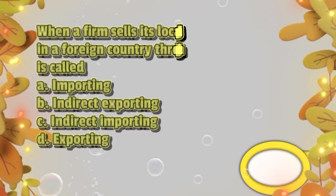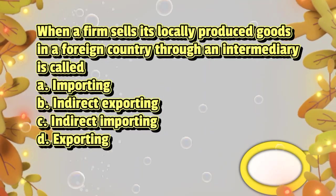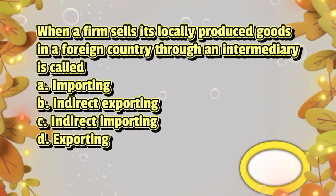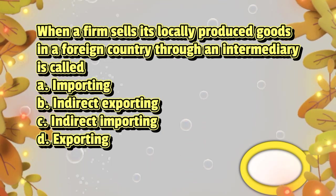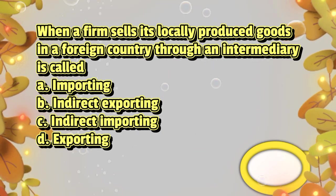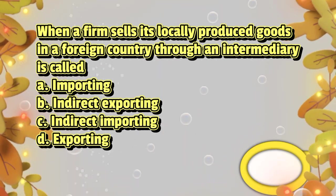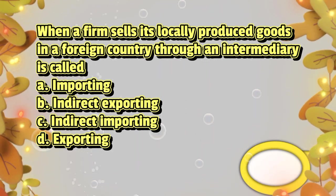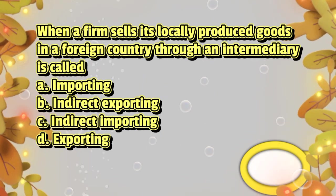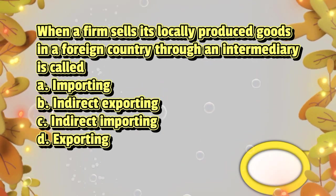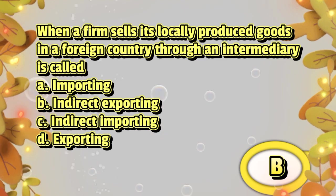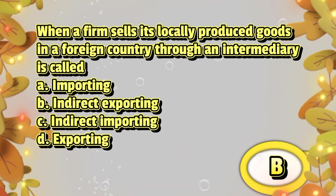When a firm sells its locally produced goods in a foreign country through an intermediary, it is called. A. Importing. B. Indirect exporting. C. Indirect importing. D. Exporting. The answer is letter B.